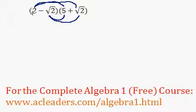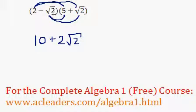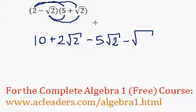So starting with 2 times 5, 10. 2 times root 2, this is just 2 root 2. Then negative root 2 times 5 is negative 5 root 2. And finally, negative root 2 times root 2 would be negative 2.